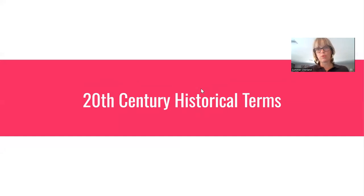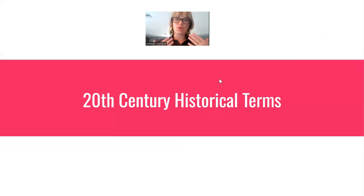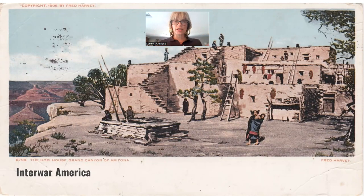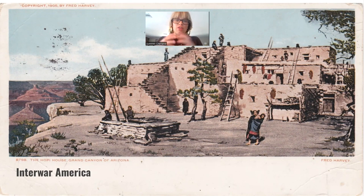Let's start with some terms relevant once you get into the literature. The first is the concept of interwar America. Since we're covering the whole 20th century but Arizona doesn't become a state until the 19-teens, we can look at the first period through an interwar lens. Historians use this term to reference the period between and encompassing World War I and World War II — roughly the 1910 era through the end of the 1930s, stretching into the early 1940s when America enters World War II.